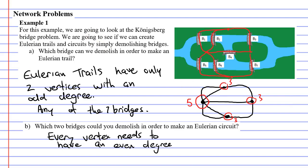I reckon we could do this by taking out bridges 3 as well as bridge 5. So what happens when we do that? Our degrees are going to become 2, 2, 2, and 4. Every vertex is now even, which means we have an Eulerian circuit.